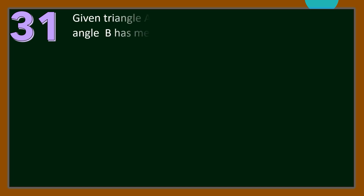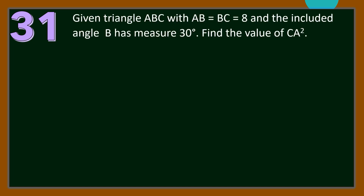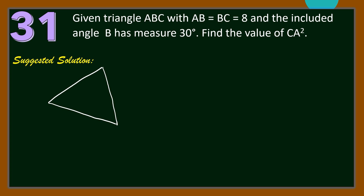Let us begin with Question Number 31. Given Triangle ABC with AB equals BC equals 8, and the included angle B has measured 30 degrees, find the value of CA squared. Let us draw Triangle ABC with AB equals BC, each measured 8 units, and angle B, the included angle, has measured 30 degrees.